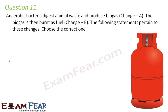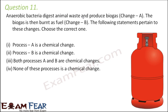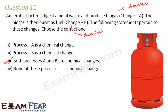Question number eleven: anaerobic bacteria digest animal waste and produce biogas, which is then burnt as fuel. Change A — digestion of animal waste to produce biogas: anaerobic bacteria act on waste materials, forming new chemical substances, so change A is a chemical change. Change B — burning of the fuel: heat is released and new substances like carbon dioxide are produced, so this is also a chemical change. Both A and B are chemical changes, making the third option correct.